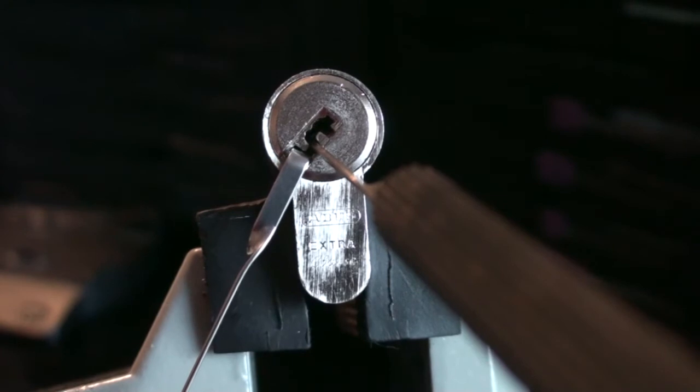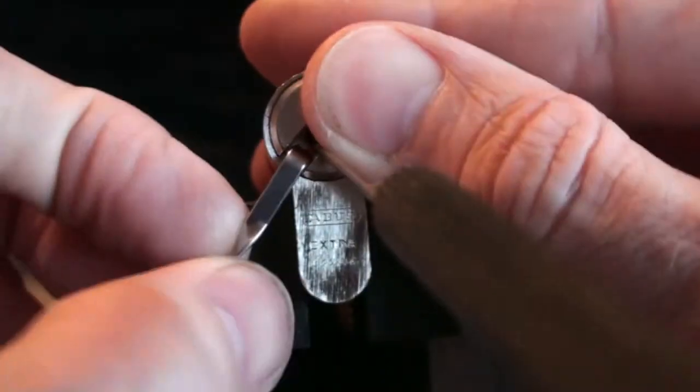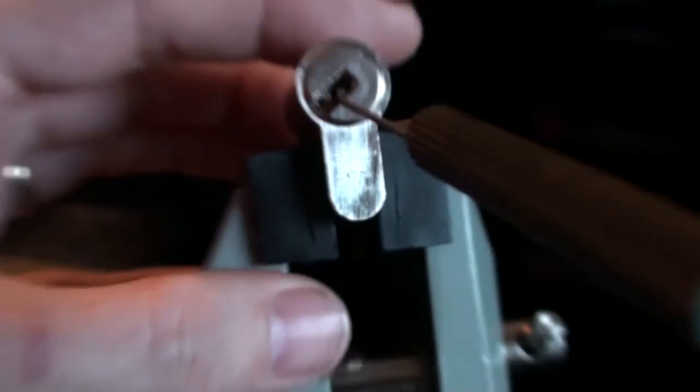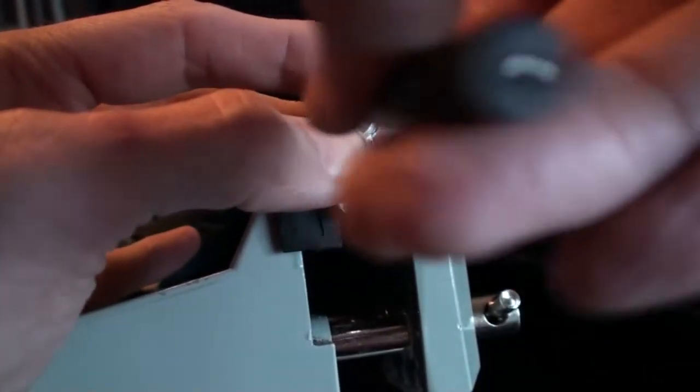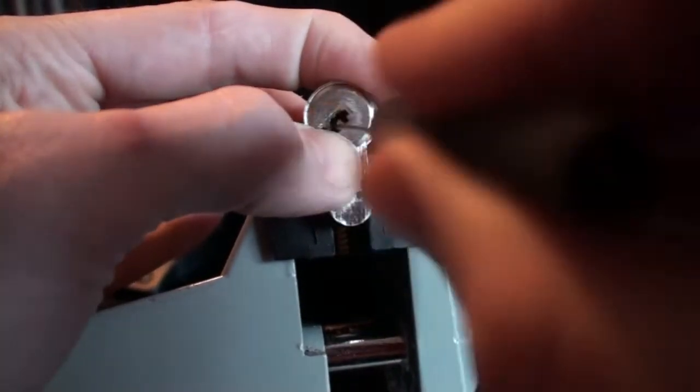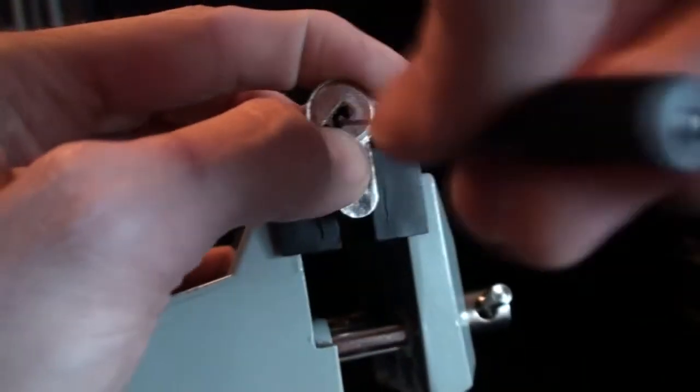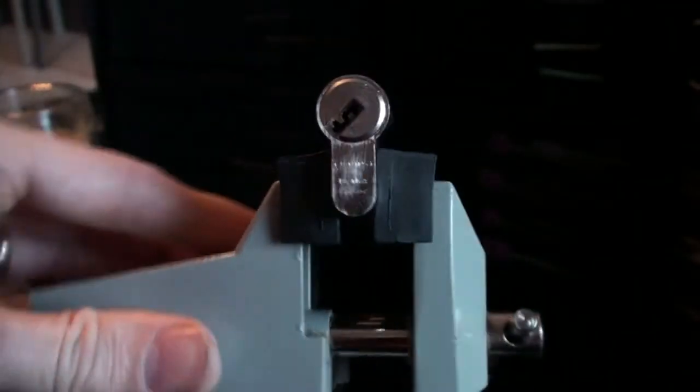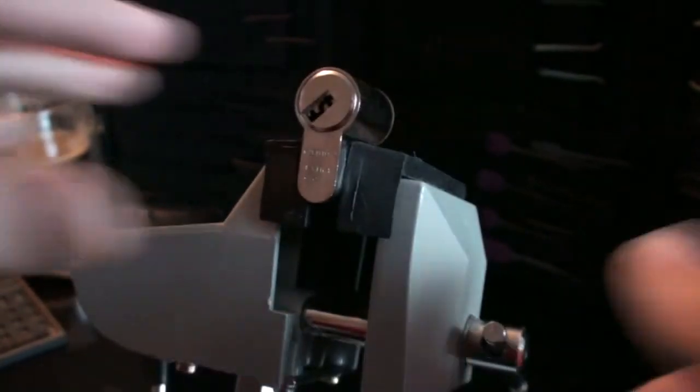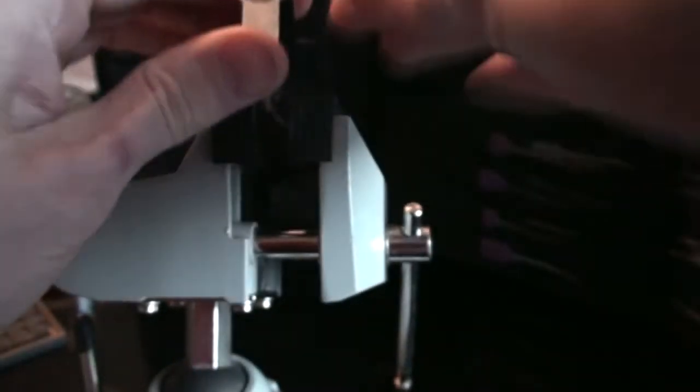So that's our ABUS EC 750 extra class. Finally open on camera. And the pick is stuck of course. Which is pretty much par for the course. Let's see what we can do. I'm fully zoomed out.